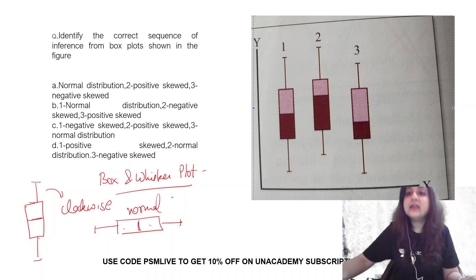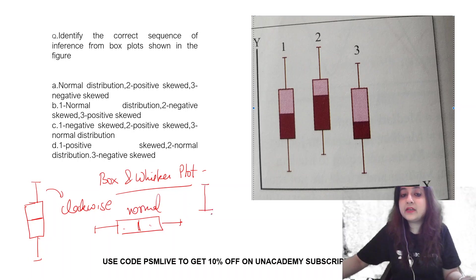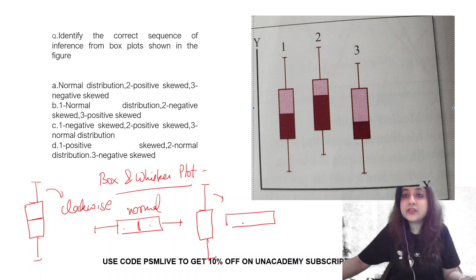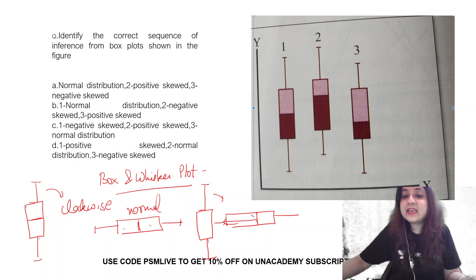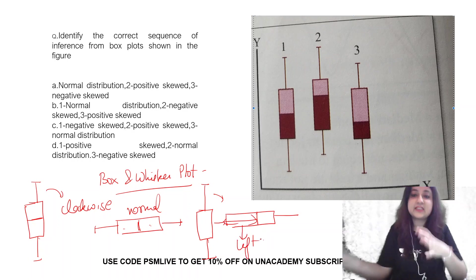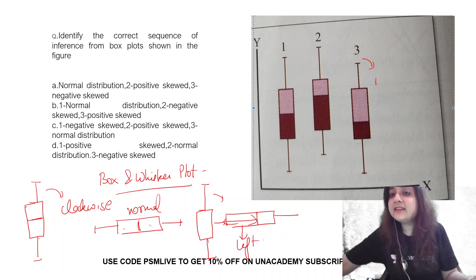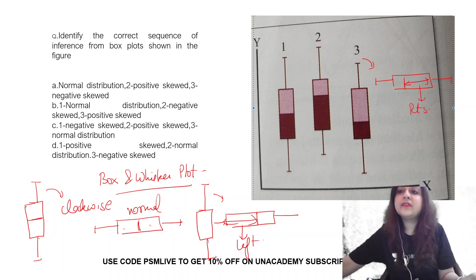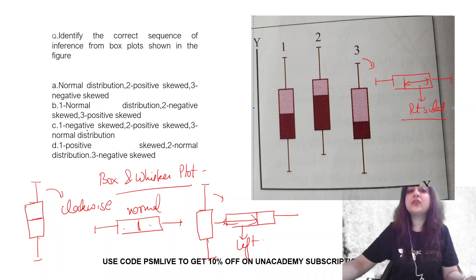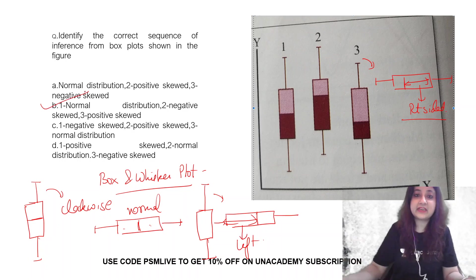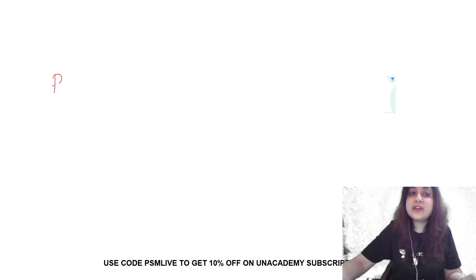Now look at the second image. If you rotate it clockwise, the gap is more towards the left side and the outliers are more towards the left side, so it becomes negatively skewed. If you rotate the third image clockwise, you will see the outliers come more on the right side, so this becomes right-sided skewness or positively skewed data.